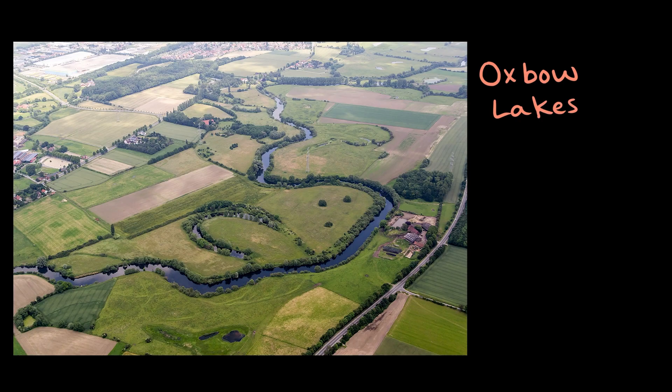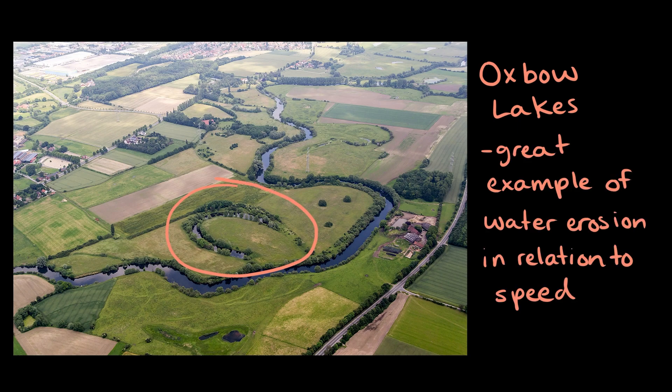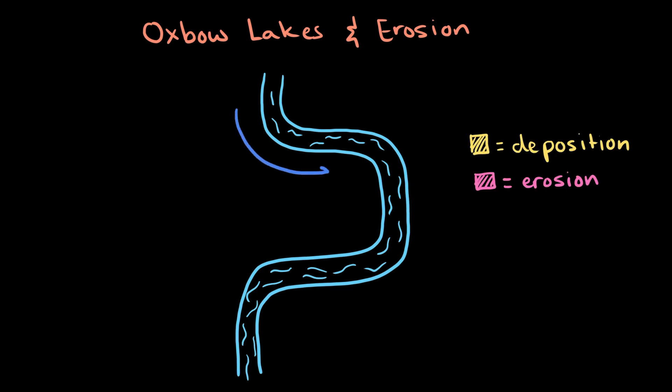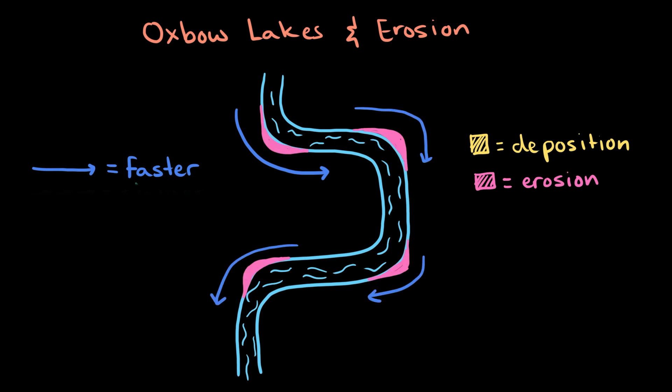A great example of water erosion, in relation to speed, is that of meandering rivers and oxbow lakes — the weird horseshoe-looking lake in this image. Let's take a look at how these oxbow lakes form. The current of the water is fastest on the outside of the bend. In turn, these are the areas where water tends to erode away the river bank.